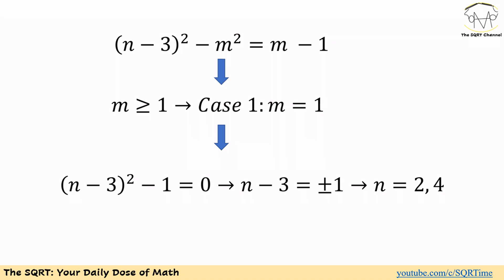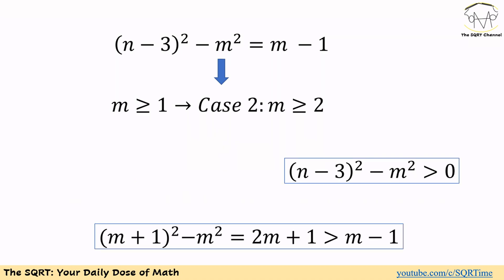Now we want to find if we can find any other answer here. From here we are going to consider the cases that m is at least 2. Since m is at least 2 then m minus 1 is greater than 0 and we can say n minus 3 to the power of 2 minus m squared is greater than 0. So it's a positive integer.